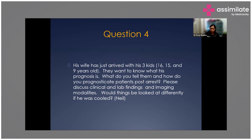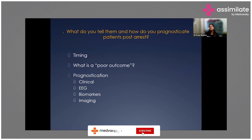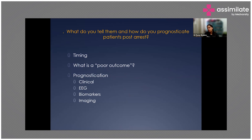After resuscitation, achieving ROSC, and cooling the patient — when the family arrives — how do you prognosticate? Important factors for neurological recovery prognostication include timing, definition of poor outcome, and prognostic tools in the form of clinical assessment, EEG, biomarkers, and imaging. The first 24 hours are very difficult for prognostication, as that is when you are actively resuscitating. Most evidence is derived from testing at 72 hours, so you should never prognosticate to the family before 72 hours. Therapeutic hypothermia changes this timing.